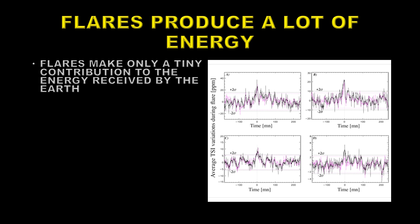However, there's something else you should know about these particular plots. The first one, A, is a sum of 42 X flares, the biggest flares around, and you barely get a detection.